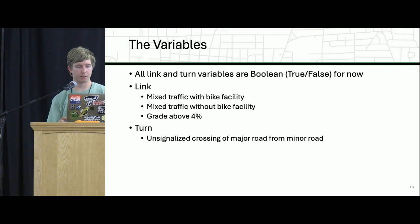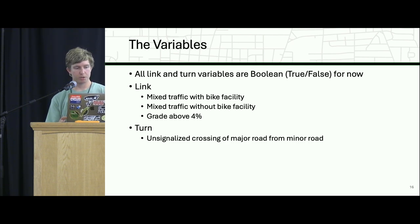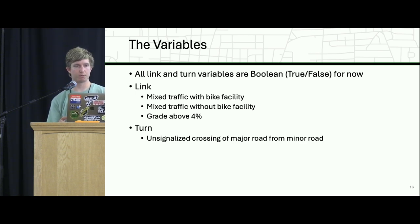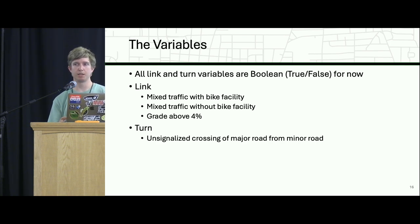The variables we're using are all Boolean — either true or false. For link variables, we used mixed traffic with a bike facility and without, and whether the grade of that link was above 4%. For turns, we had a turn impedance for unsignalized crossings of a major road with a minor road — so if you reach an intersection with a stop sign but the road you're crossing doesn't have one and it's a large road.